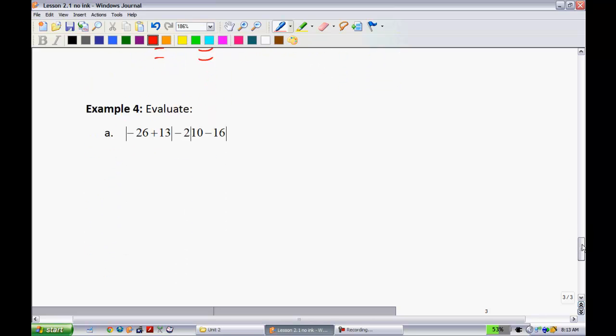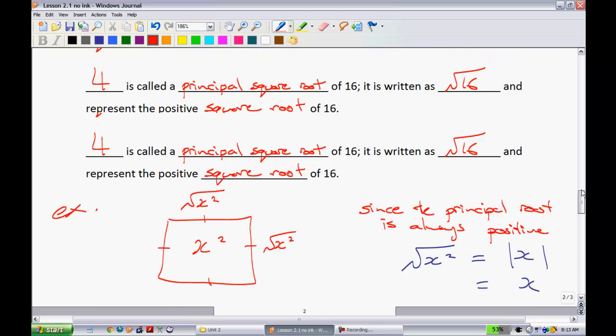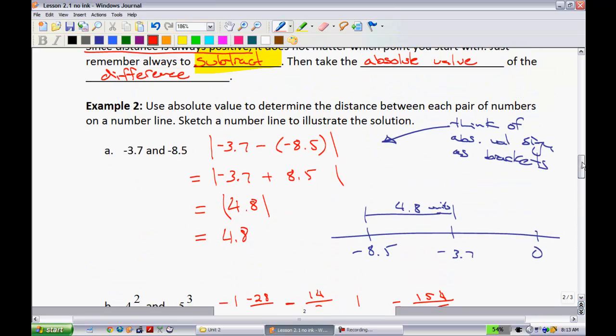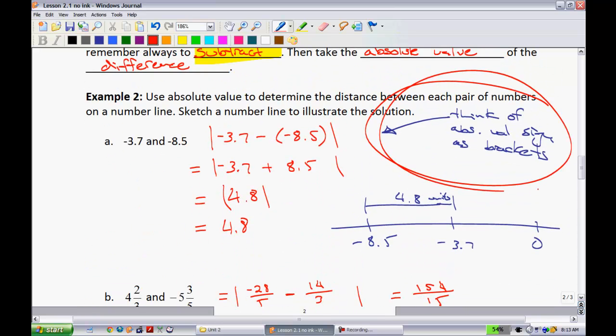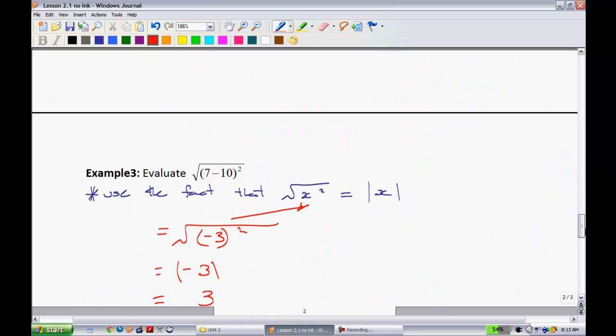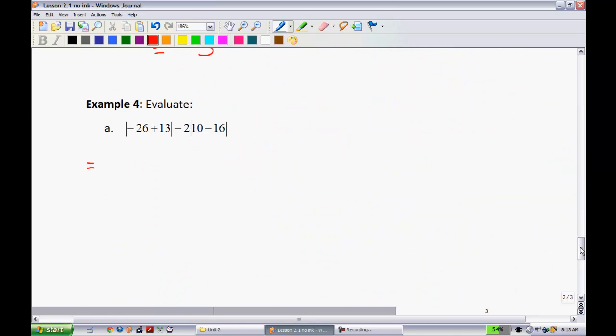Let's try another one. Example 4. This is going to be one that you're going to get to a little bit more often. When you have these multiple absolute value signs, just always simplify and use them just like you would brackets in BEDMAS. So that was kind of the note I made on a previous page. Yeah, this part. Think of the absolute value signs as brackets, and then just follow your regular order of operations.